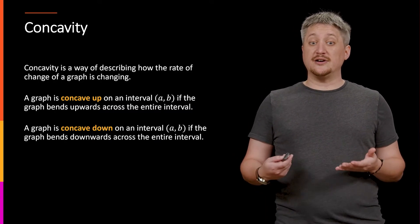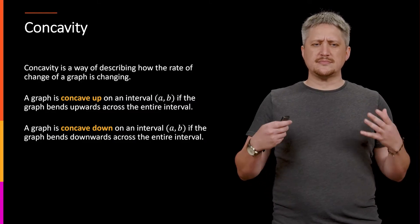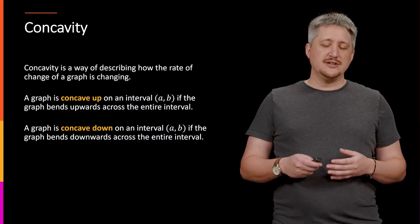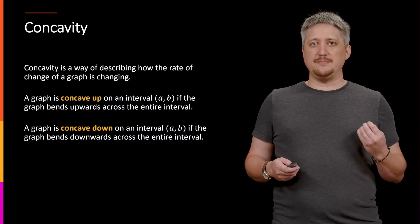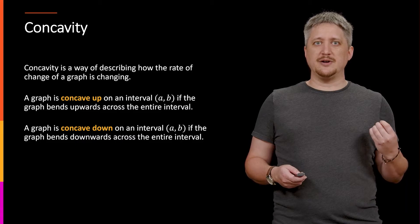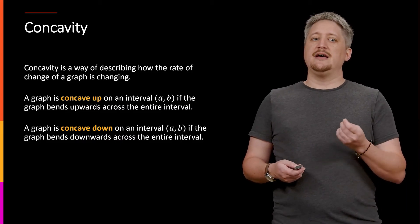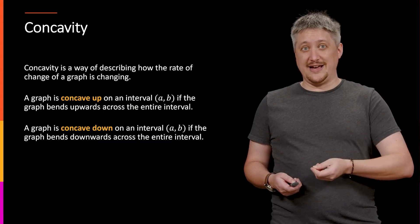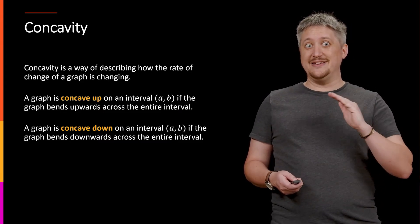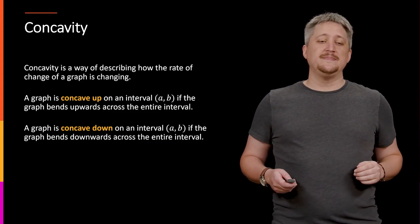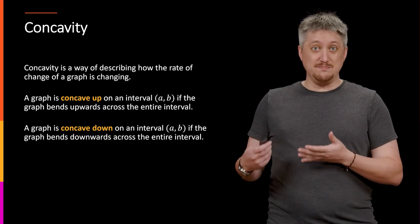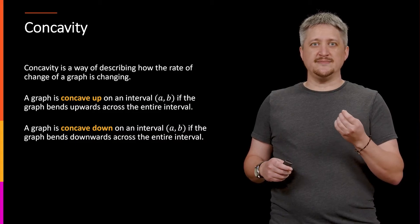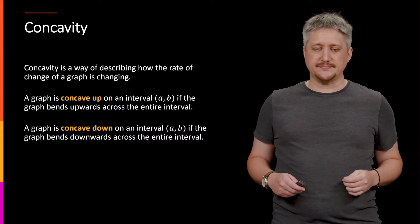In contrast, concave down over some interval is where the graph bends downward across that entire interval. Even though it might be increasing, the amount it is increasing is going down so that it's sort of bending down as it goes. This is what option B looked like — it spiked up quickly, but then it started leveling off.